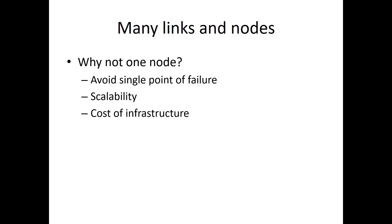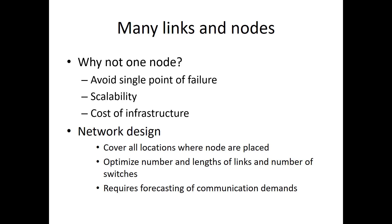So given that you want to build a network, you have free choice of how many links and how many nodes you want to use. You end up with the network design problem. The network should cover all locations where the nodes are placed, and you would like to optimize the number and length of the links and the number of switches. Optimization here could mean minimizing the number of links and number of switches, or more advanced criteria pertaining to reliability, costs, and availability of paths where links could be easily pulled.